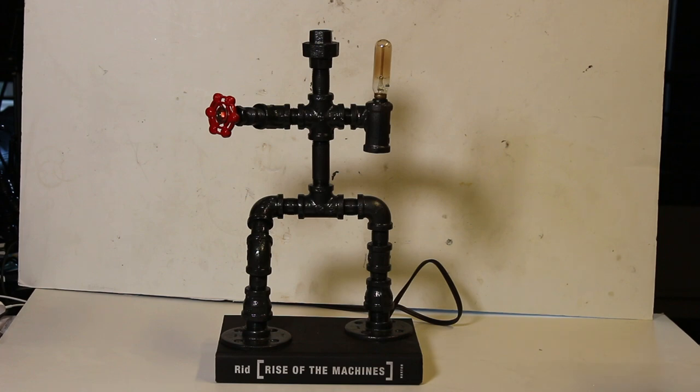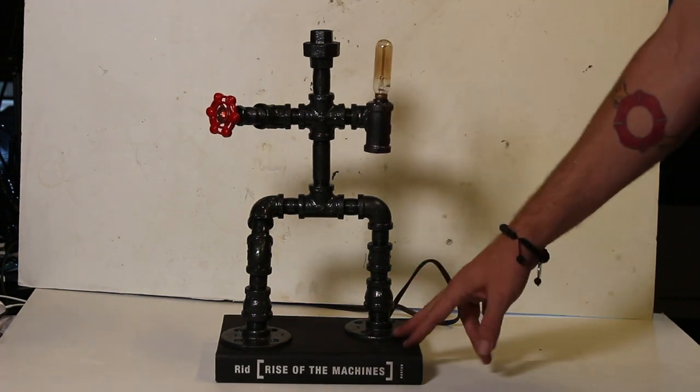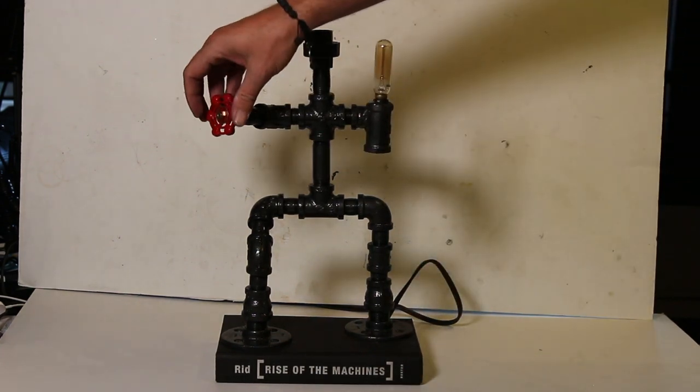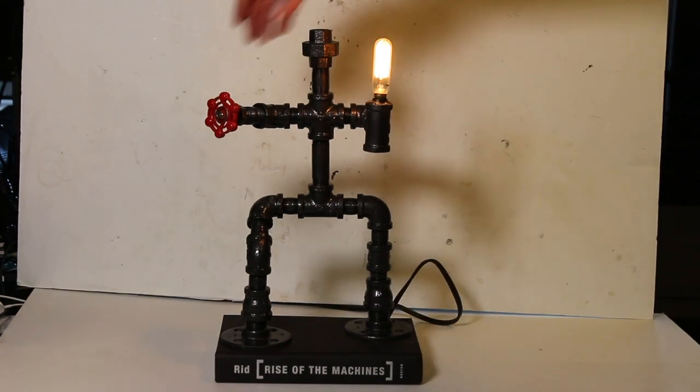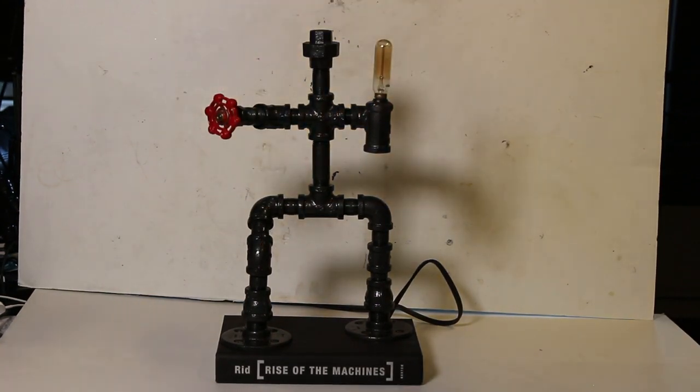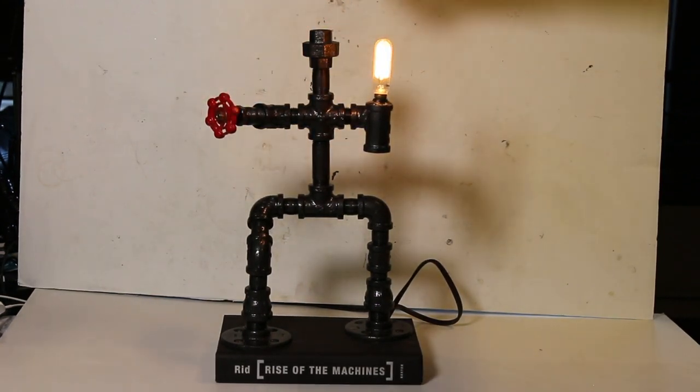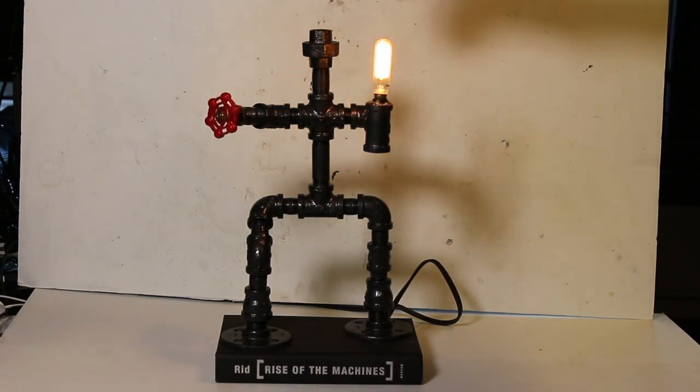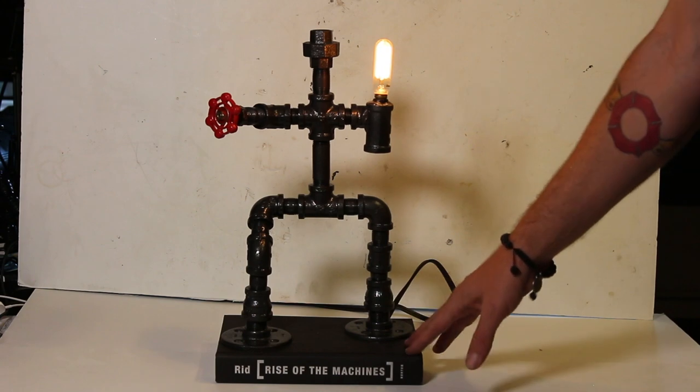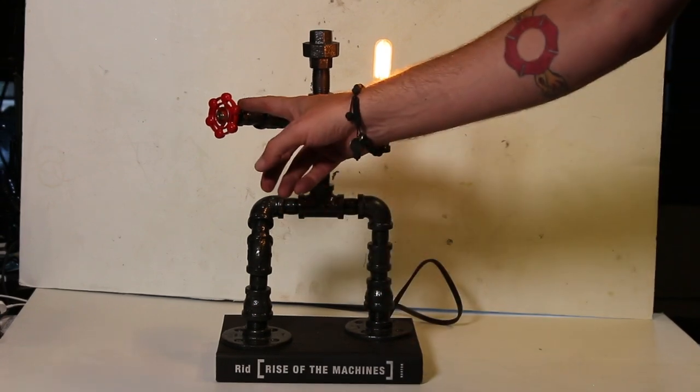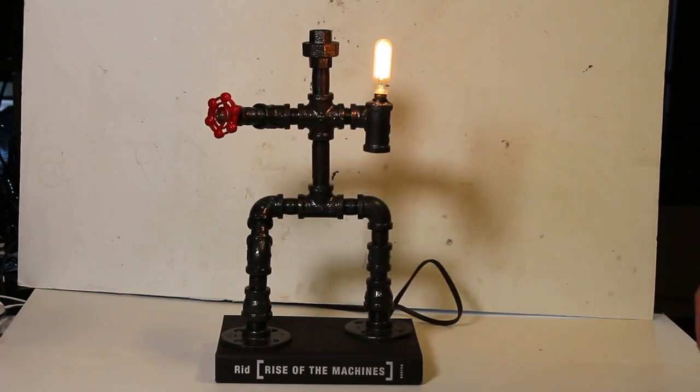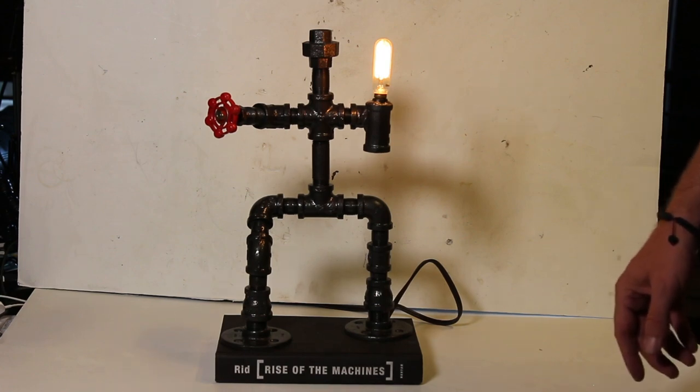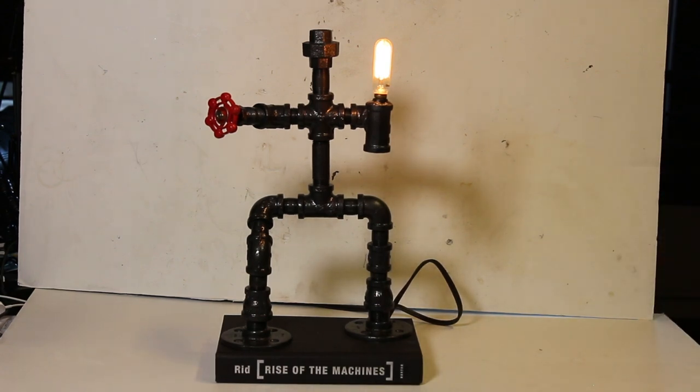And here we have the painted pipe lamp mounted on a book. As you can see here, just turn the shield, turns on and off the light. And if you have anything you want to know about how we mounted it to the book or how we built these, we'll put the links to those videos in the descriptions. I hope you enjoyed it. Thanks for watching and have a great day.